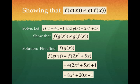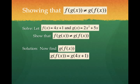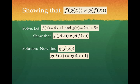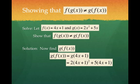What happens when we do g of f of x? So now I'm plugging f of x, 4x plus 1, into my g function, so everywhere I see an x in g, I write 4x plus 1 in parentheses.